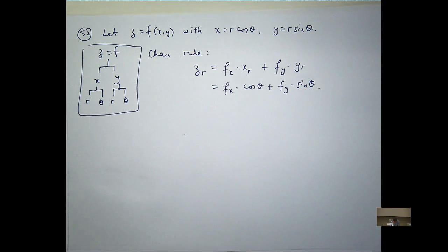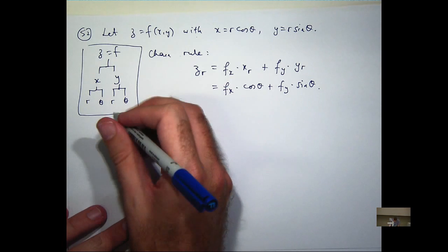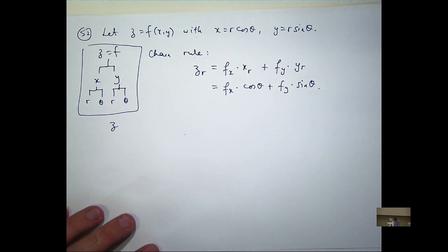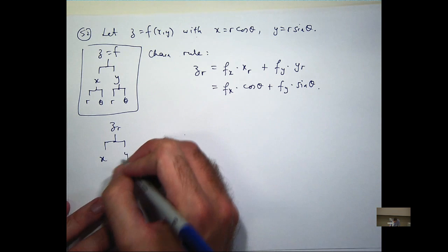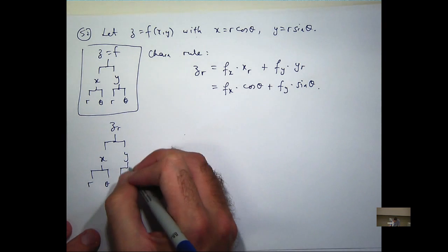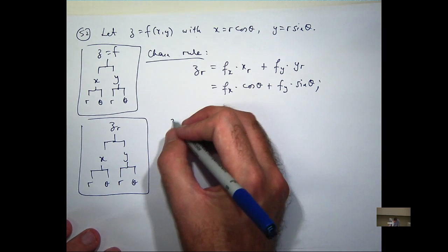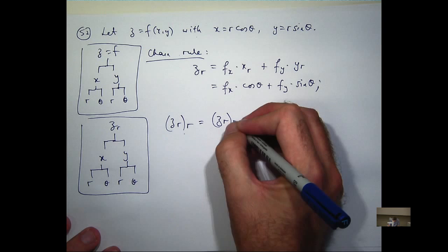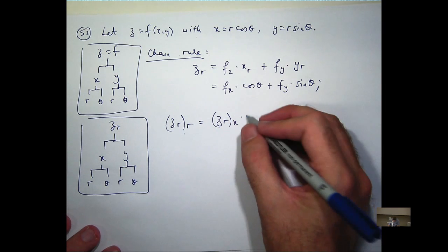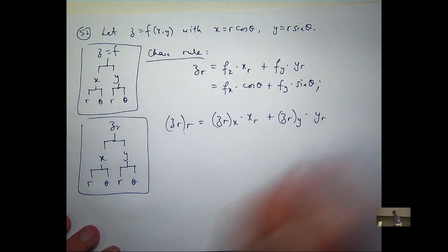So let's say I wanted to calculate z sub r r. I would draw my little diagram again. I'm not going to do z sub theta because I'm just going to leave that out. So z sub r r is going to be z sub r sub x times x sub r plus z sub r sub y times y sub r.